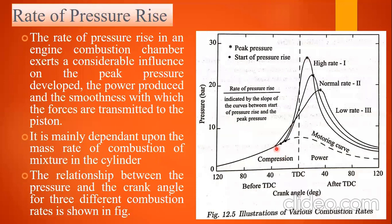If the spark advance is around 30 degrees before TDC — say up to around 35 degrees before TDC — if we have initiated the spark at 40 degrees BTDC, then the start of pressure rise is going to be around 35 degrees before TDC. We have already seen the start of pressure rise and the attainment of peak pressure during the combustion phases. So the start of pressure here is around 35 degrees before TDC.